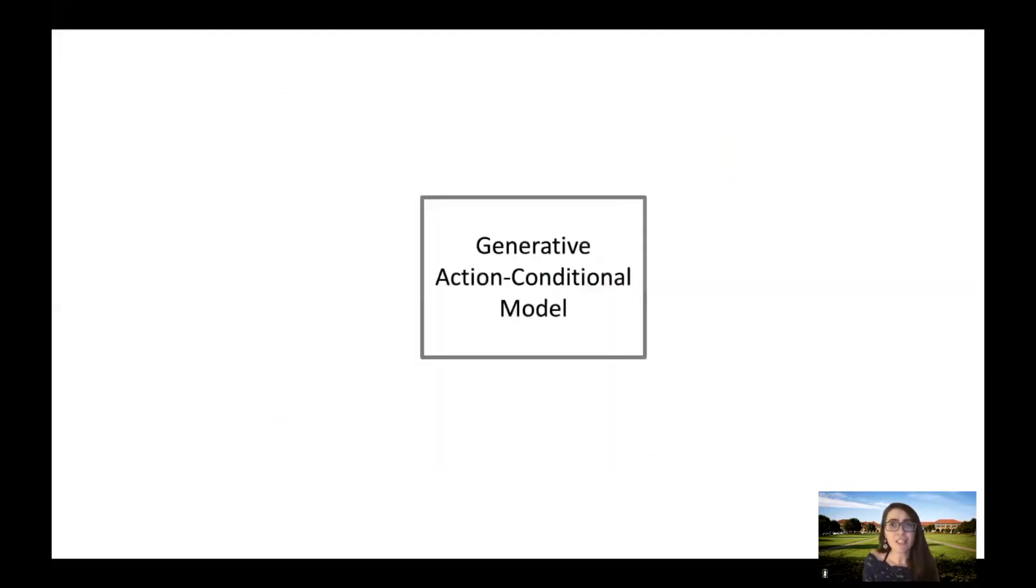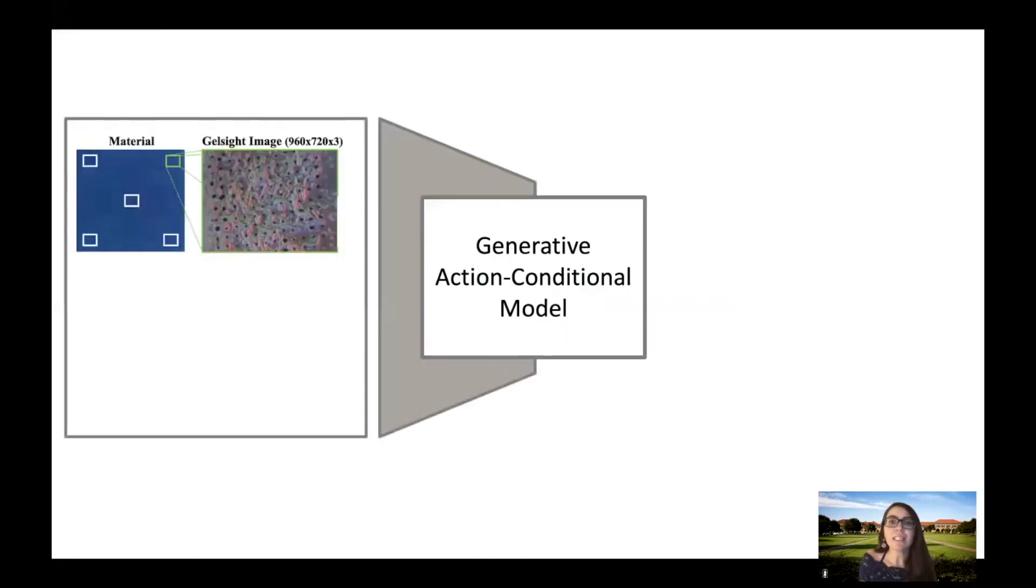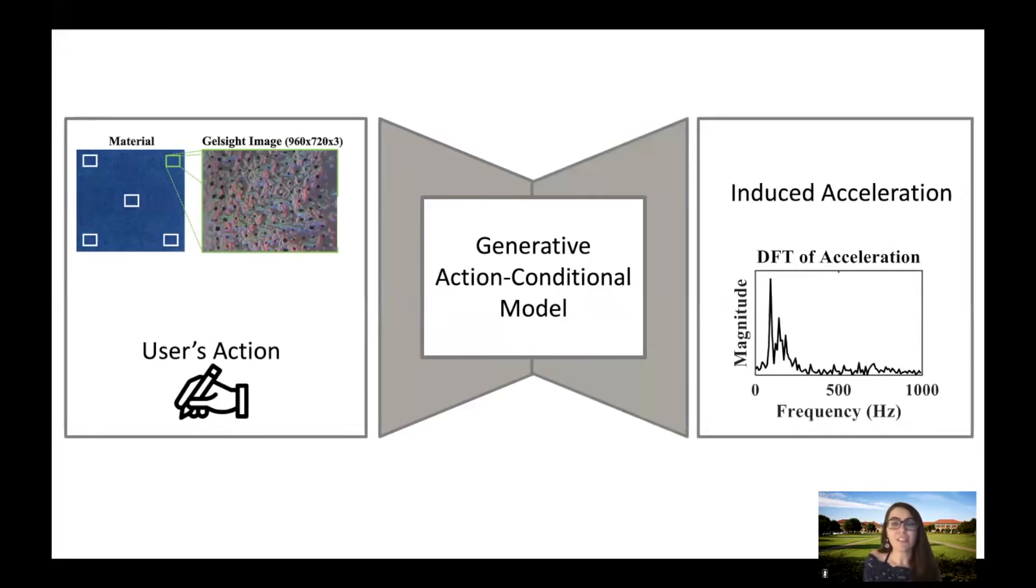As previously mentioned, we use a novel learning-based method for haptic texture generation. This model takes as input an image from the gel site and force and speed of the user on that texture during a tool-mediated interaction. Given this input, we train a model that predicts the magnitude of the discrete fast Fourier transform of the generated acceleration in the handheld probe.